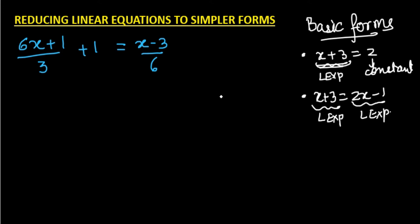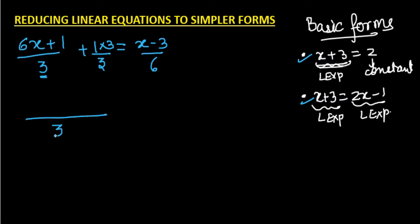This linear equation is a little complex and we will try to reduce it to one of those forms. The first step is to make the denominator the same. The denominator is 3, so we multiply 1 by 3 and also divide it by 3. Taking the LCM of 3, from the first term we get 6x + 1 and from the second term we get 3.